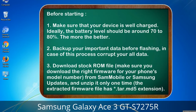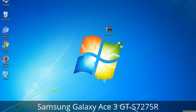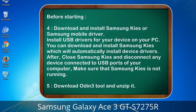Download from Sammobile or Samsung Updates, and unzip it only one time. The extracted firmware file has a *.tar.md5 extension. 4. Download and install Samsung KIES or Samsung mobile driver to install USB drivers for your device on your PC. Samsung KIES will automatically install device drivers. After installation, close Samsung KIES and disconnect any device from your USB ports — make sure Samsung KIES is not running. 5. Download the Odin 3 tool and unzip it.